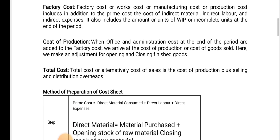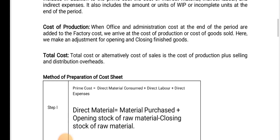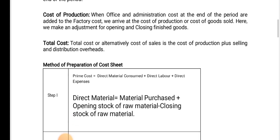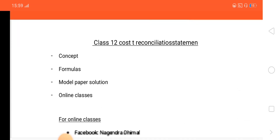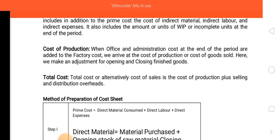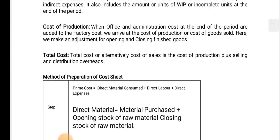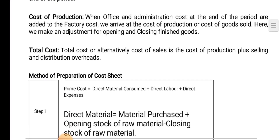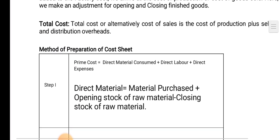Cost of production means administrative expenses added to the previous costs. The total cost means selling and distribution overhead — selling and distribution related costs.